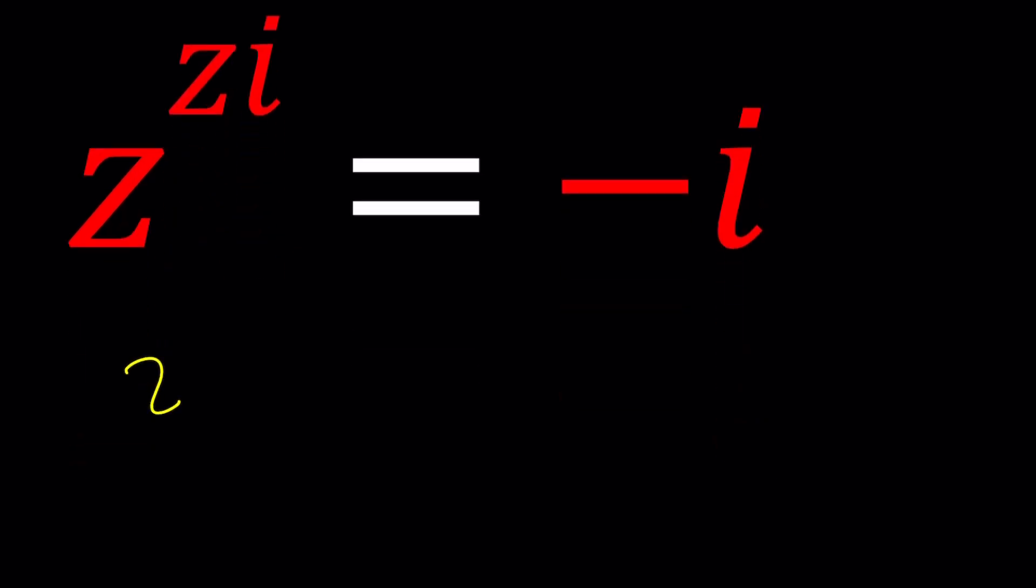We're going to turn z to the zi into e to the power zi ln z because that's what it is. Whenever you have some complex number to the power of another complex number, that power or exponent goes here and the base goes here. And we want to set this equal to negative i.